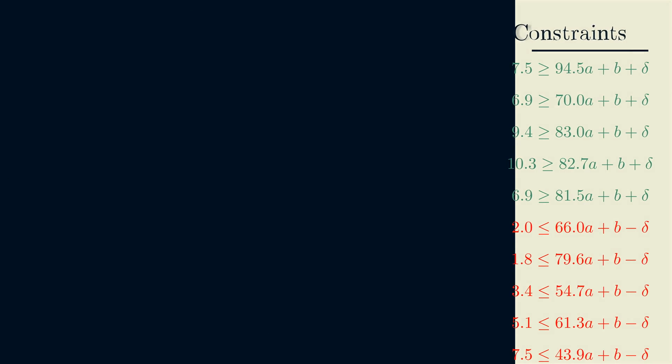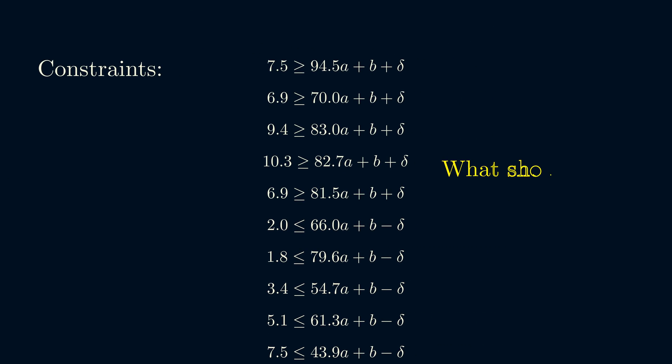However, how do we know how large the buffer should be? The trick is, we set delta to be a variable, alongside A and B. And then set the objective of our optimization problem to maximize delta, so we let the optimization problem find the buffer for us.